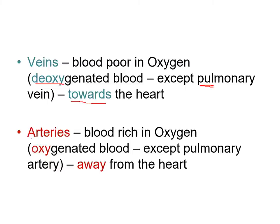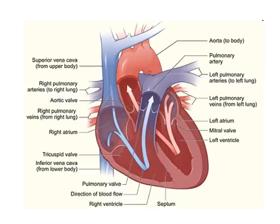Whereas the arteries contain blood that is rich in oxygen, also called oxygenated blood with a high concentration of oxygen. The exception again is the pulmonary circulation, where the pulmonary artery carries deoxygenated blood. In all cases, including the pulmonary artery, arteries always carry blood away from the heart. The blood from the right atrium and the right ventricle is deoxygenated. Now let's learn how this deoxygenated blood reaches the heart.